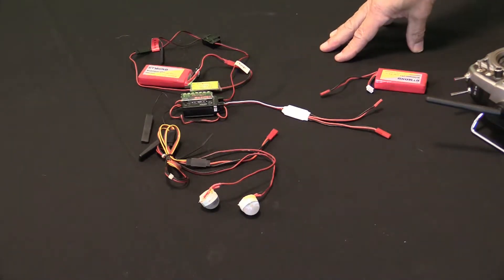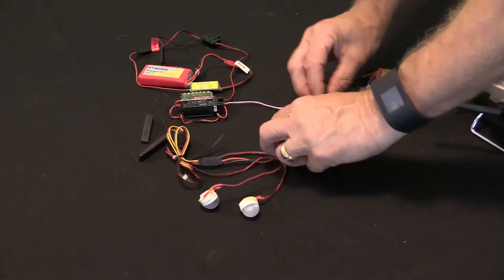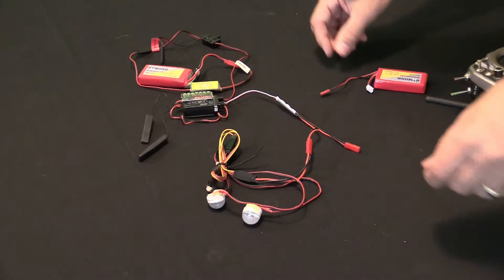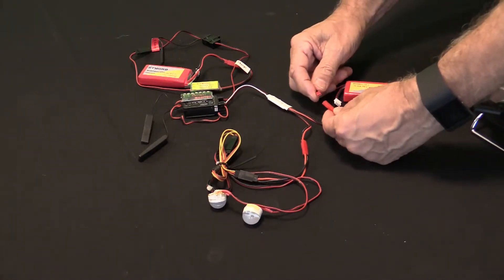On this particular application, what I want to do is be able to turn my landing lights on and off. So we're going to hook up the lights, and then we're going to hook the auxiliary battery up. I'm actually using a 7.4 volt LiPo right here to power my lighting system.